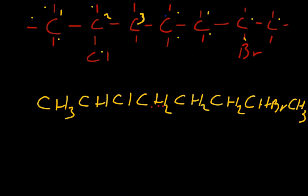Now, some textbooks, as a final point, will put parentheses around the CH2s and put a little three right there to represent that you have three CH2s in a row. So instead of writing all the CH2s out, they put parentheses around one CH2 and a number indicating how many are in a row. You can have five or seven or nine — whatever the chain length — so they use this shorthand. Watch out for that too.